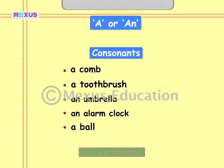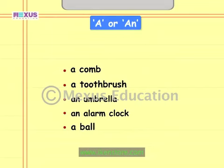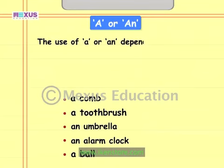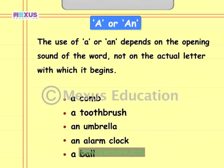There are three words in ZeeZee's list that start with consonants. They are: 'comb', 'toothbrush' and 'ball'. The word 'comb' starts with the consonant sound 'kuh', 'toothbrush' starts with the consonant sound 'tuh', and 'ball' starts with the consonant sound 'buh'. So we use 'a' before these words. The use of 'a' or 'an' depends on the opening sound of the word, not on the actual letter with which it begins.